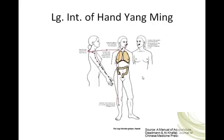Here is our channel. As a Hand Yang-channel, it begins on the hand at the radial side of the nail root at Large Intestine 1. It moves up the radial side of the index finger, crosses between the first and second metacarpals, passes between extensor pollicis longus and extensor pollicis brevis, and moves up the lateral aspect of the upper extremity, crosses the shoulder, and travels posteriorly to connect with all the other Yang-channels. All Yang-channels meet at Du-14, just under the spinous process of C7.